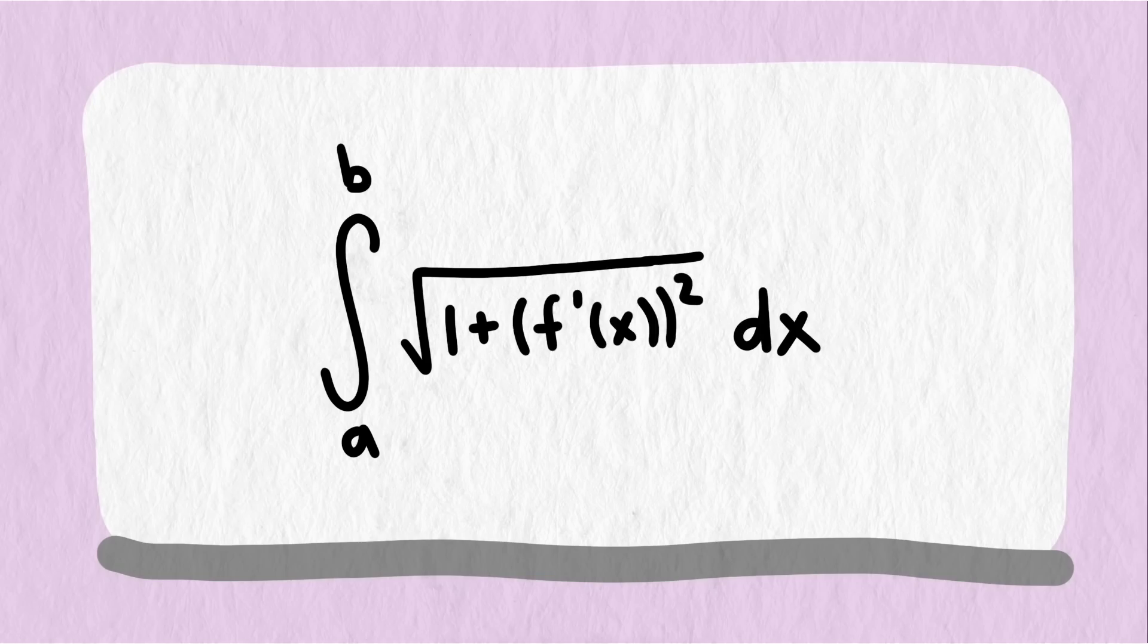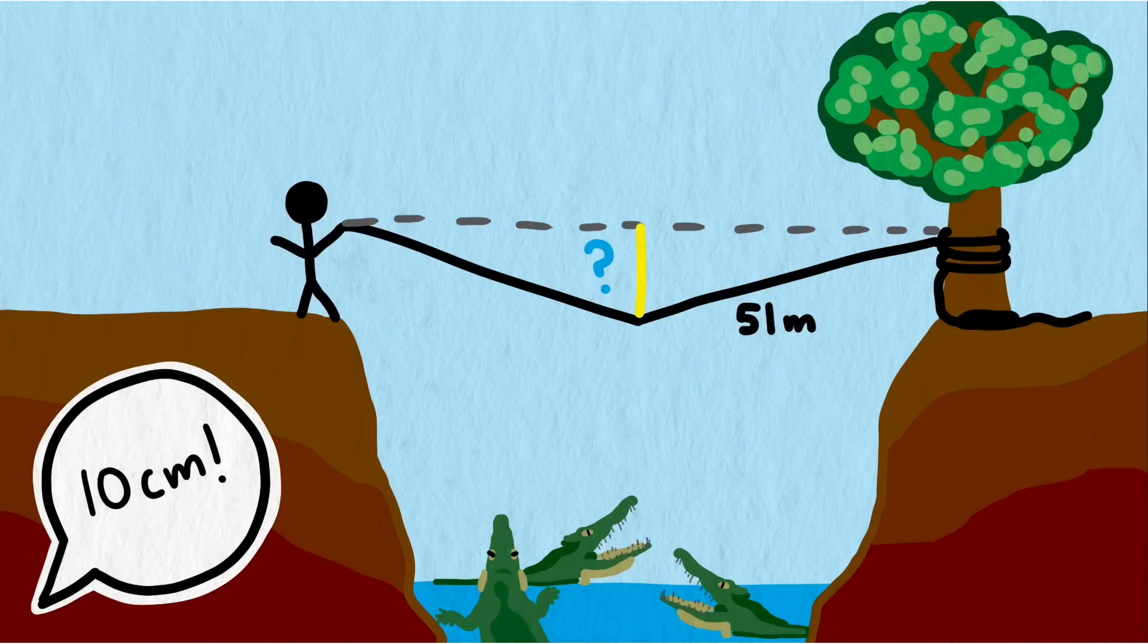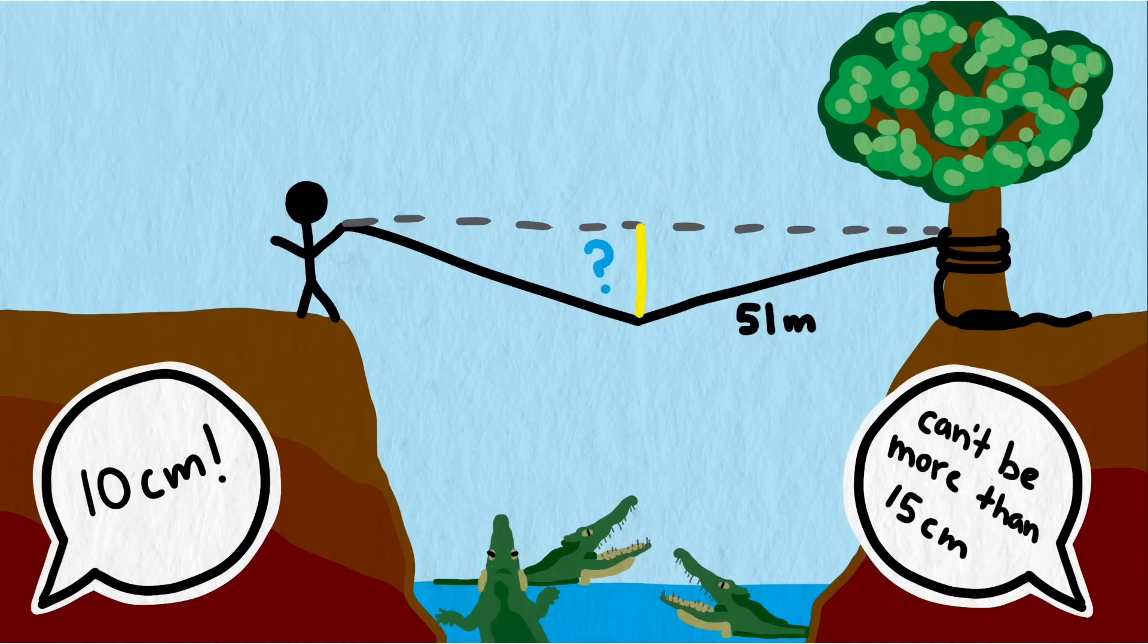Every time I give one of these chasm problems to my students, they're always way off. They all guess a distance that is way smaller than the actual value. Many guess values lower than a meter.